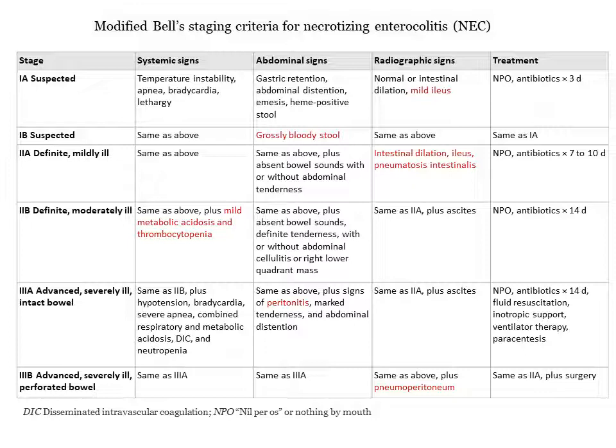Within each stage there is an A and B. Stage 1A has general features with mild ileus and heme-positive stool; stage 1B has obvious blood in stool. Stage 2A is definite NEC with intestinal dilatation, ileus, and pneumatosis intestinalis in a mildly ill baby; stage 2B is moderately ill with additional metabolic acidosis and/or thrombocytopenia. Stage 3A is advanced NEC without pneumoperitoneum; stage 3B includes features of peritonitis or bowel perforation with pneumoperitoneum.